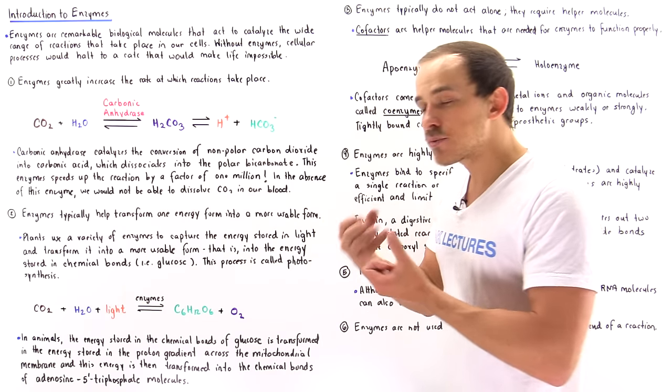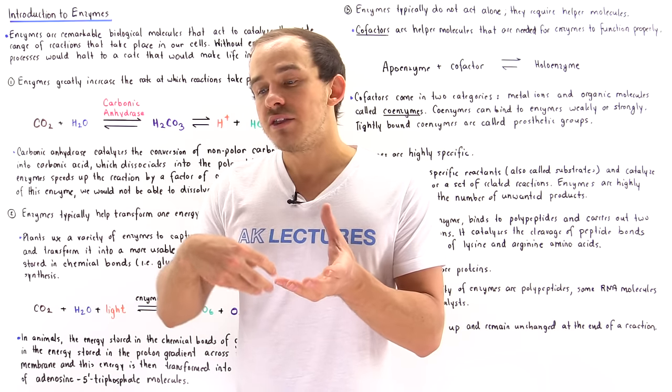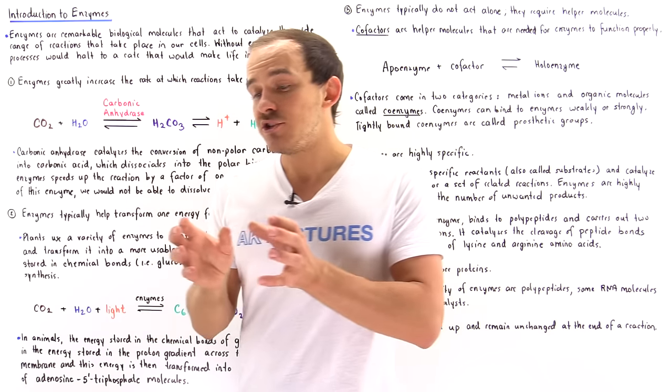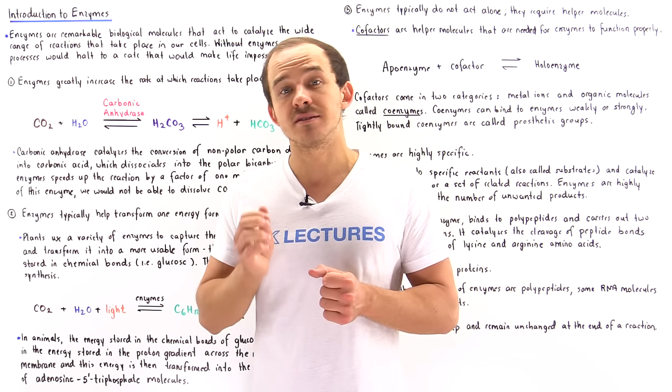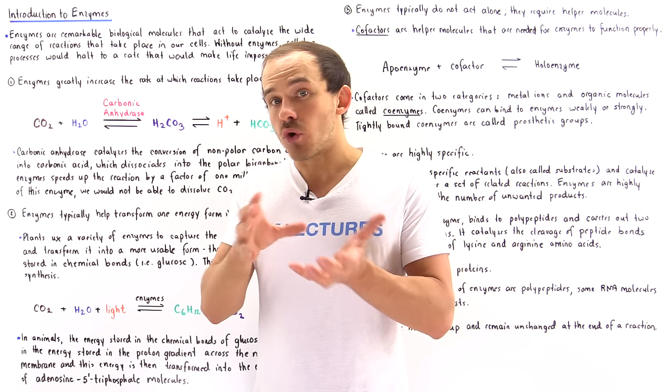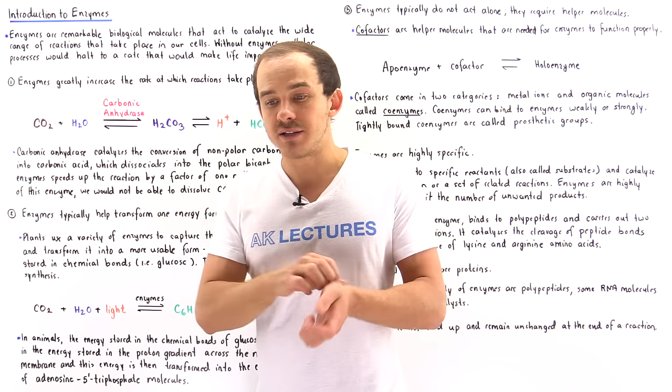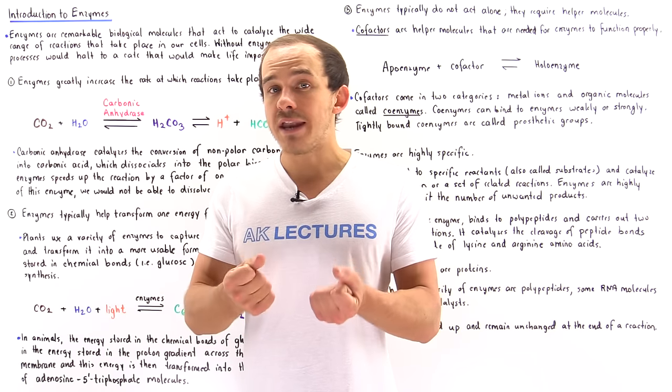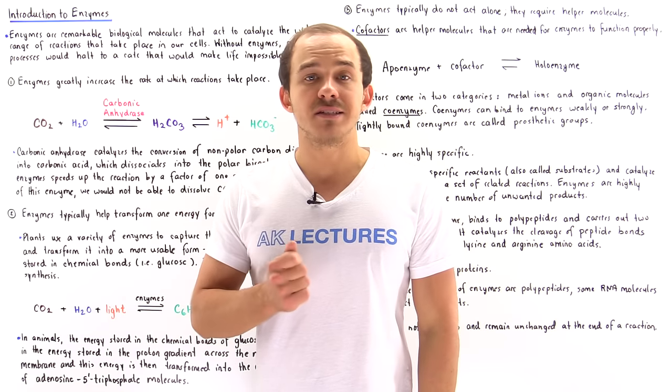So basically in these processes we have many different enzymes that essentially catalyze the transformation of the energy stored in the chemical bonds of glucose into the energy that is stored in the proton gradient that exists across the membrane of mitochondria. And then the energy stored in that electrochemical gradient due to the protons found across the mitochondrial membrane is transformed into energy stored in the bonds of ATP molecules, adenosine triphosphates.